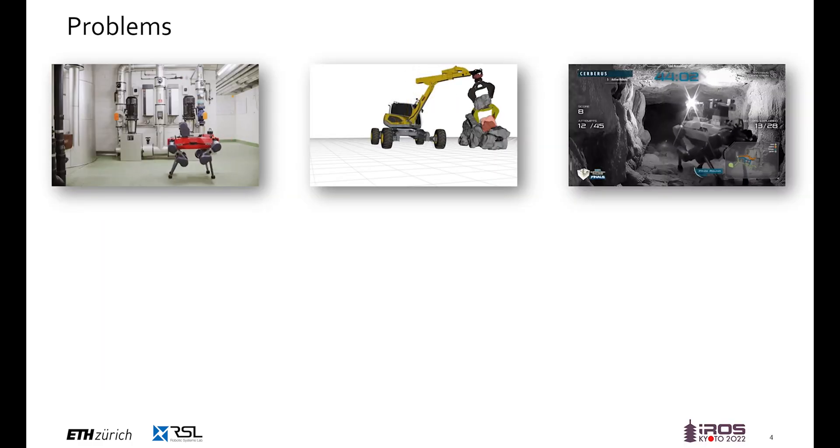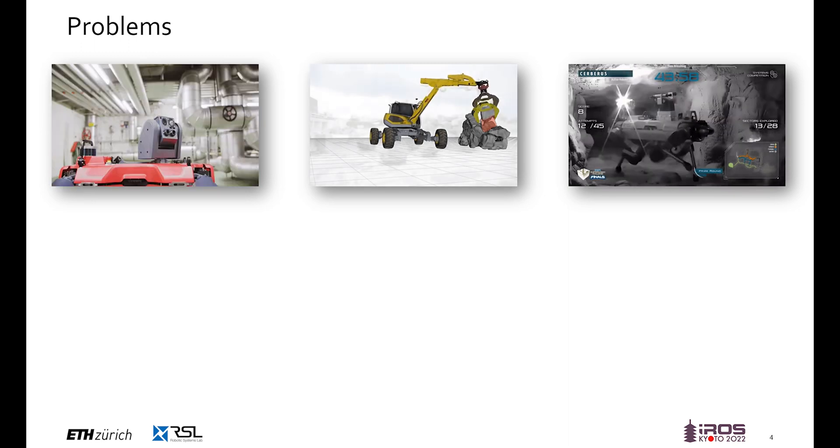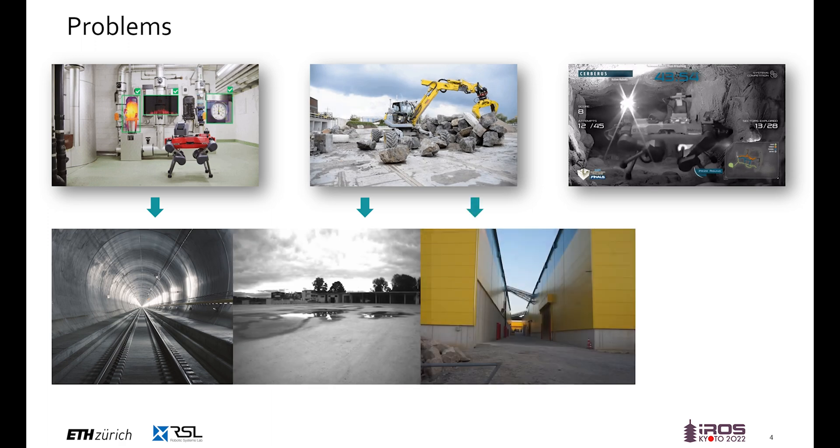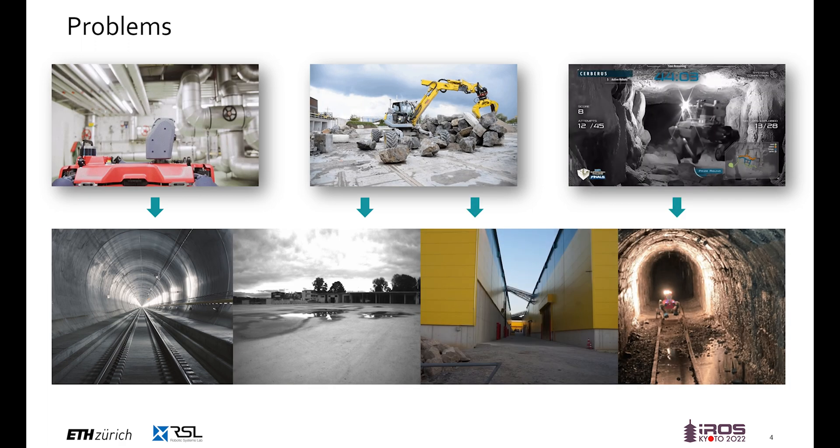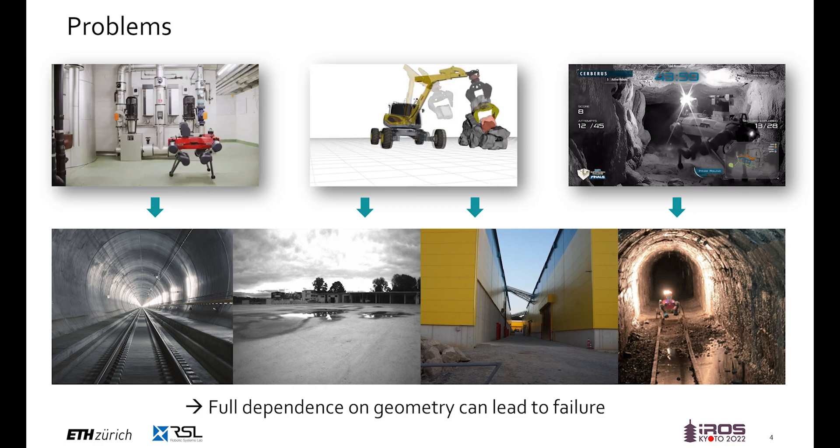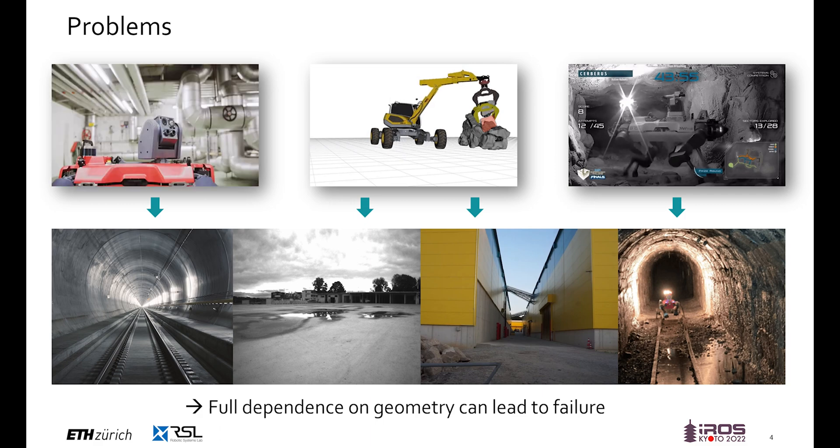However, in other scenarios the problem can become more tricky. If robots are required to operate in tunnels, on open planes, in symmetric passages, or in underground environments, this very same dependence on geometry can suddenly lead to fundamental localization failure in cases of insufficient geometrical constraints.